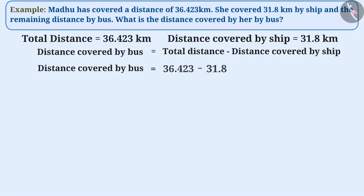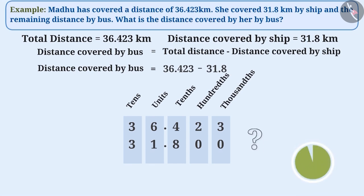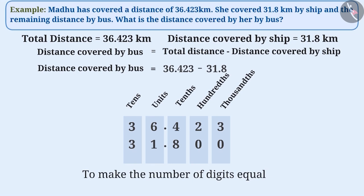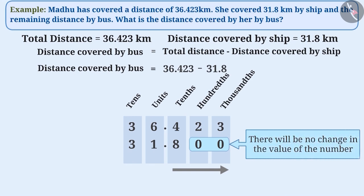To do the subtraction of these numbers, we will represent them one below the other according to their place values, so that the digits with the same place value come under the same column. We will write zeros at the place of the hundredths and thousandths after 8. We do this because it is necessary to make the number of digits equal in both numbers. Since we can write any number of zeros to the right side of the decimal point, there will be no change in the value of the number.